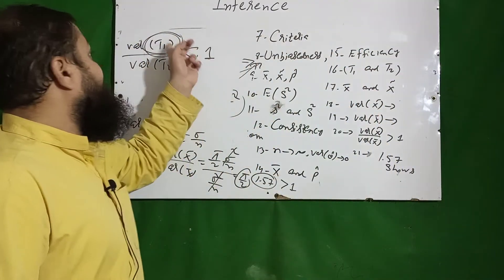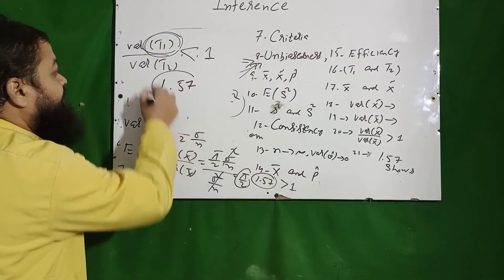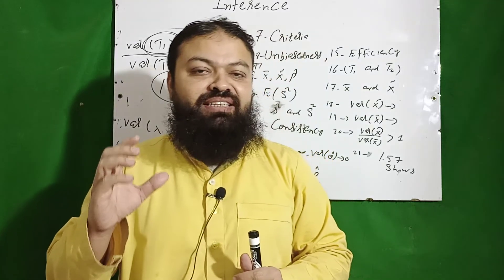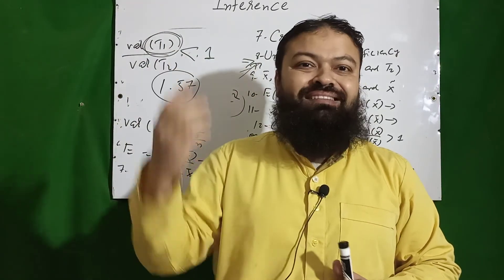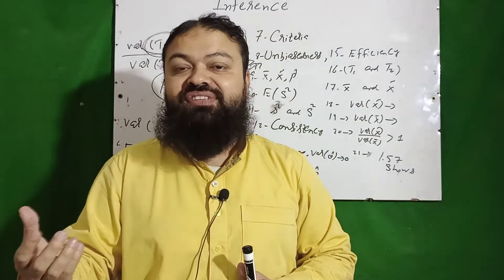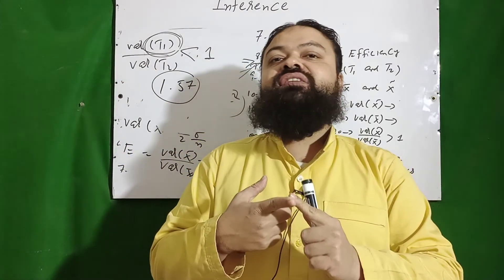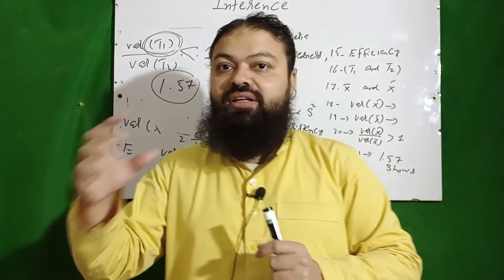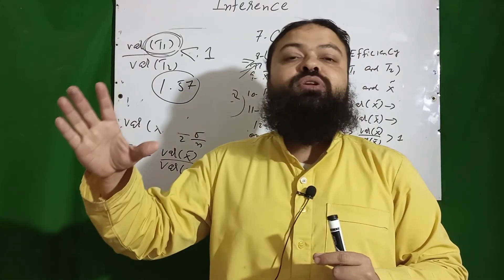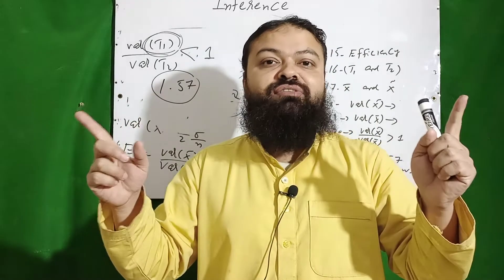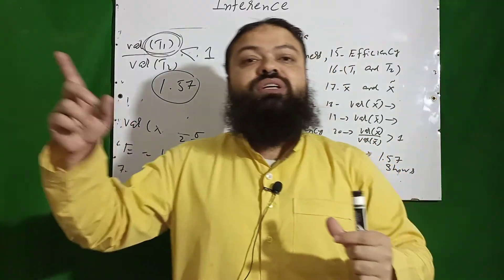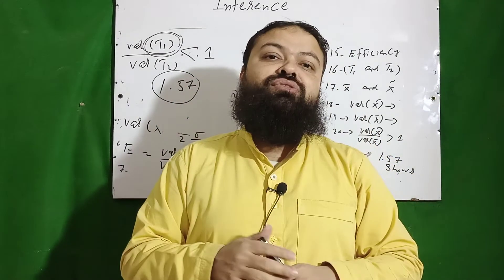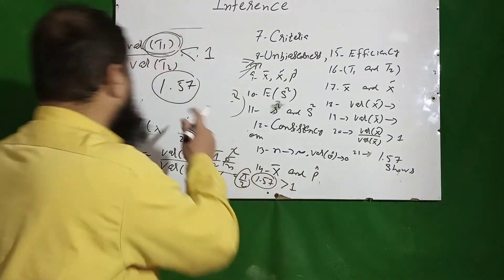The value 1.57 is an important interview question. It signifies that a sample of 100 used to compute the mean gives the same accuracy as a sample of 157 used to compute the median. That is why x-bar with a sample of 100 is equivalent to the median with a sample of 157 — this demonstrates that the mean is more efficient than the median.